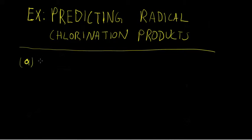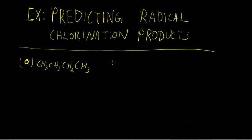Let's say butane were reacted with chlorine under conditions that would result in a reaction — either high temperature or irradiation with UV light. Let's say this mixture were irradiated. What products could we expect if we were not concerned with the relative percentages of the products?